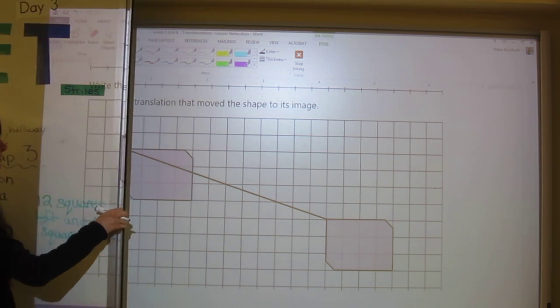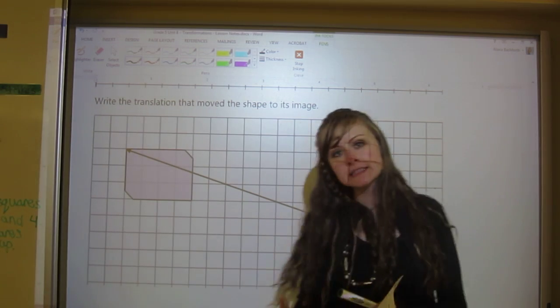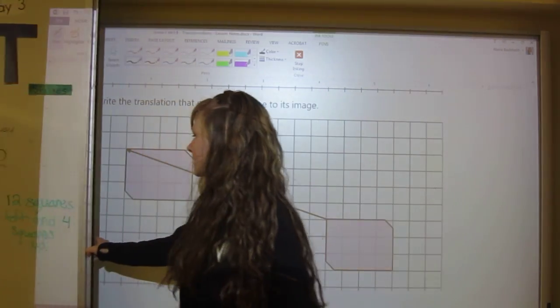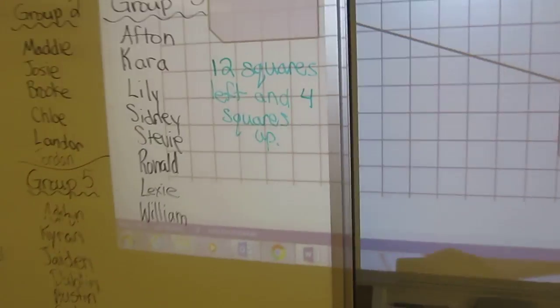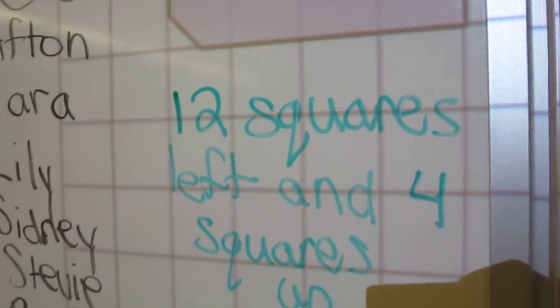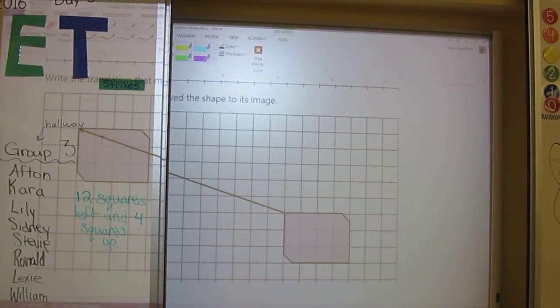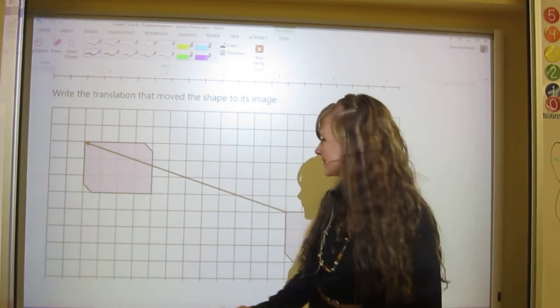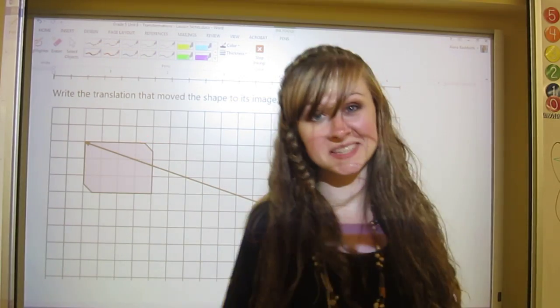Now you might have gotten tricked if you didn't notice that this is the translated image and this is the original. You have twelve squares left and four squares up - that's all you need to say. It's pretty basic what you need to do. That is the concept of translations. It's the most simplest one.